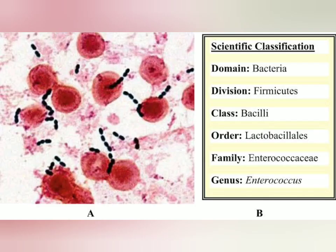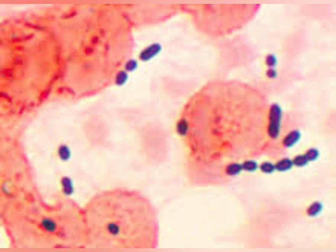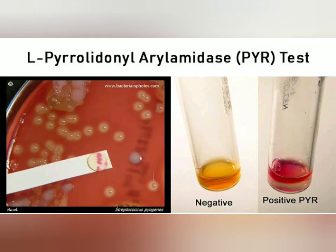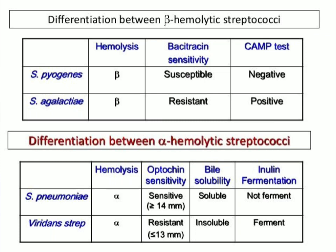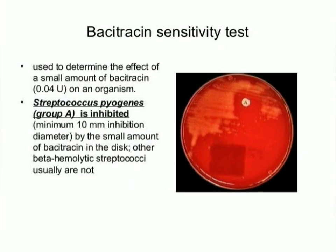Gamma hemolytic, or non-hemolytic, or indifferent streptococci are known as the enterococcus group. An example is Streptococcus faecalis. Hydrolysis of pyrrolidonyl naphthylamide — the PYR test — and failure to ferment ribose are useful in differentiating Streptococcus pyogenes from other streptococci. Sensitivity to bacitracin is also employed as a convenient method for differentiating Streptococcus pyogenes from other hemolytic streptococci.